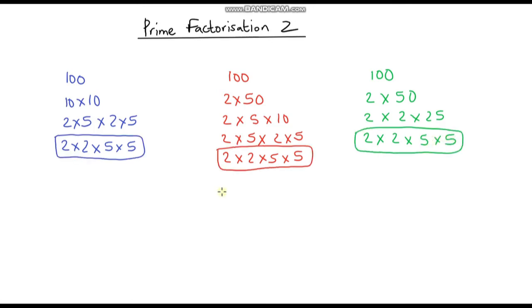Now you may already be aware that mathematicians are quite lazy, so there is a shorter way of writing this down and we call it index notation. So 2 times 2, we can rewrite as 2 squared or 2 to the power 2. 2 to the power 2 is the same as 2 squared; we're multiplying 2 by itself 2 times.